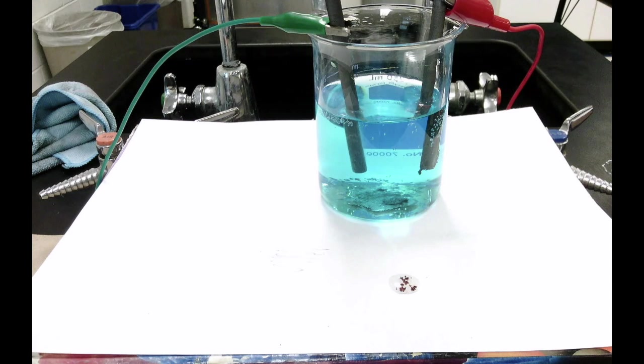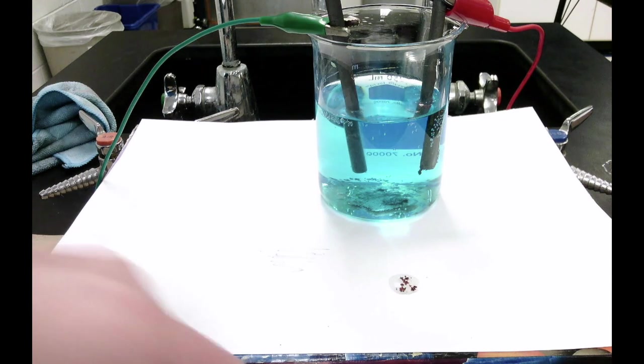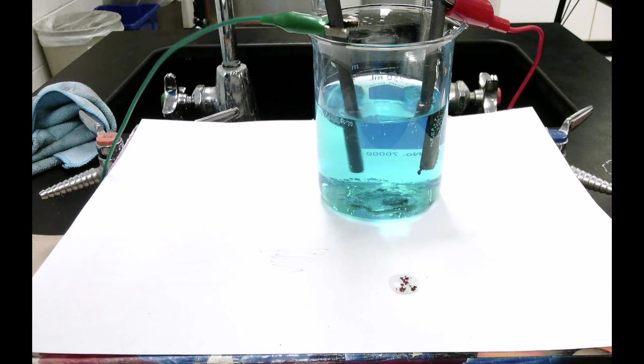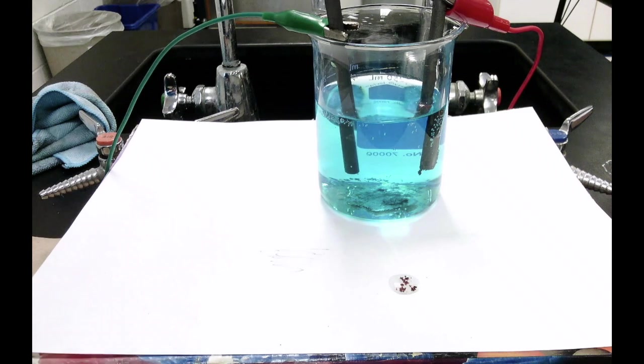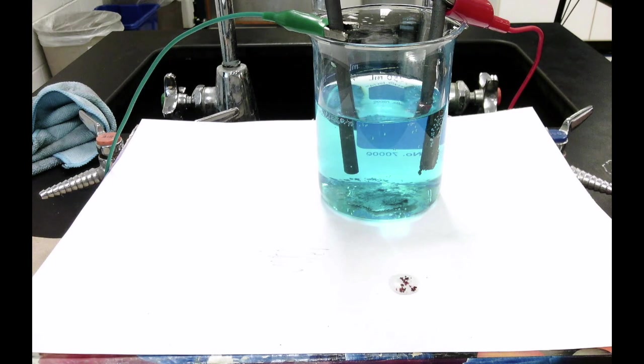Now what you need to think about is the fact that both of these substances when they're dissolved are ions. So the copper ion starts off dissolved in solution. It then becomes solid copper metal at the negative electrode. If copper is being attracted to the negative electrode, what must the charge of the copper ion be?